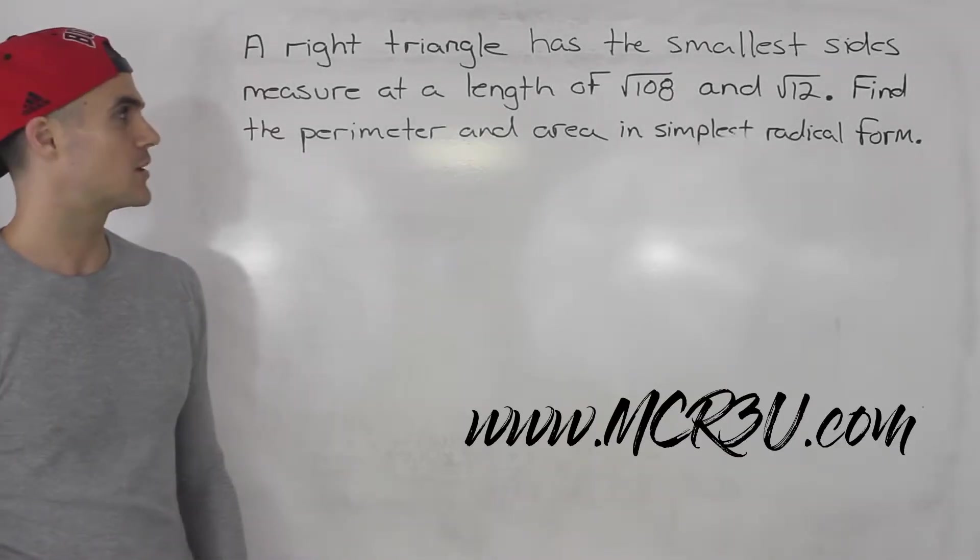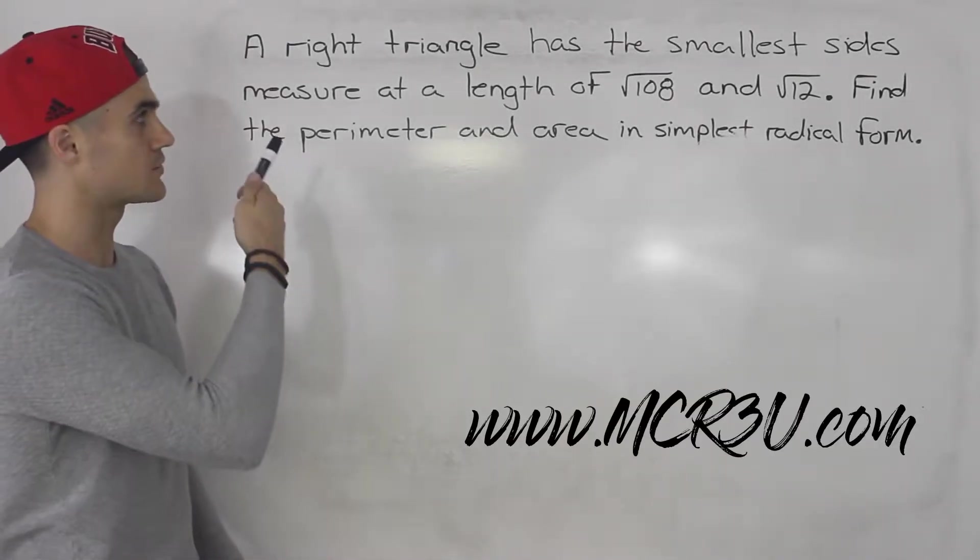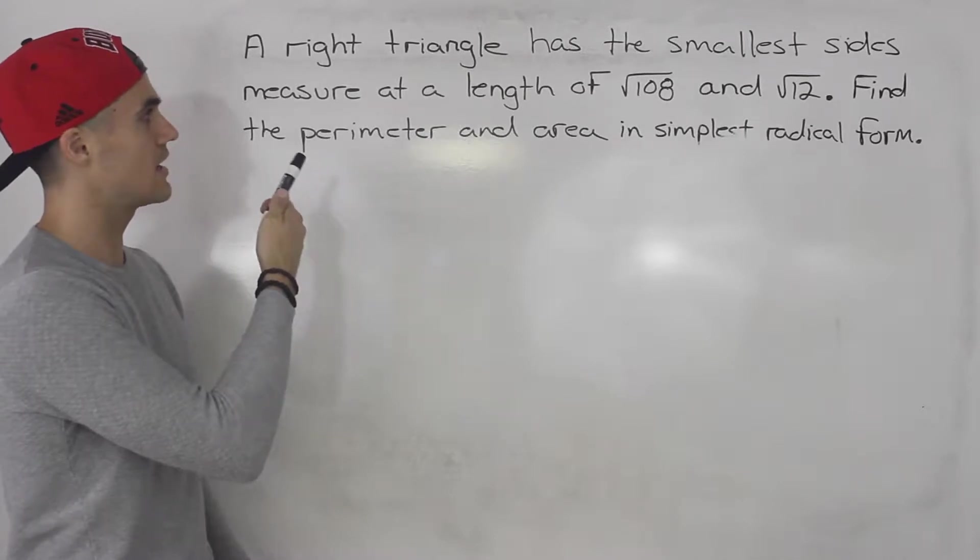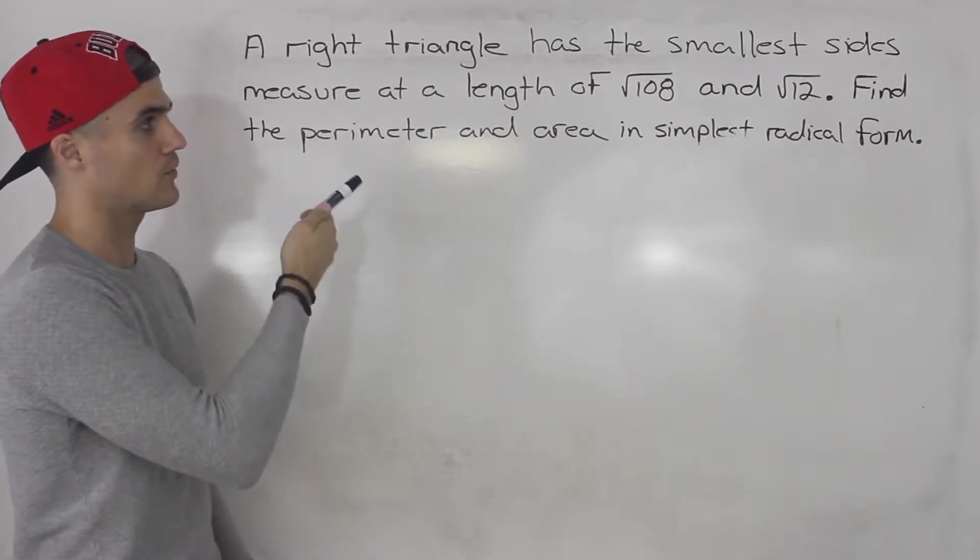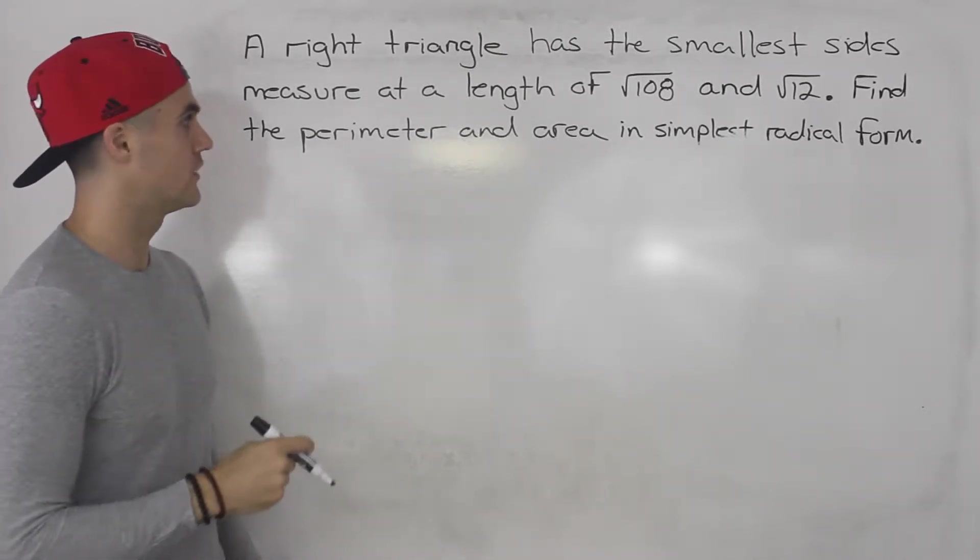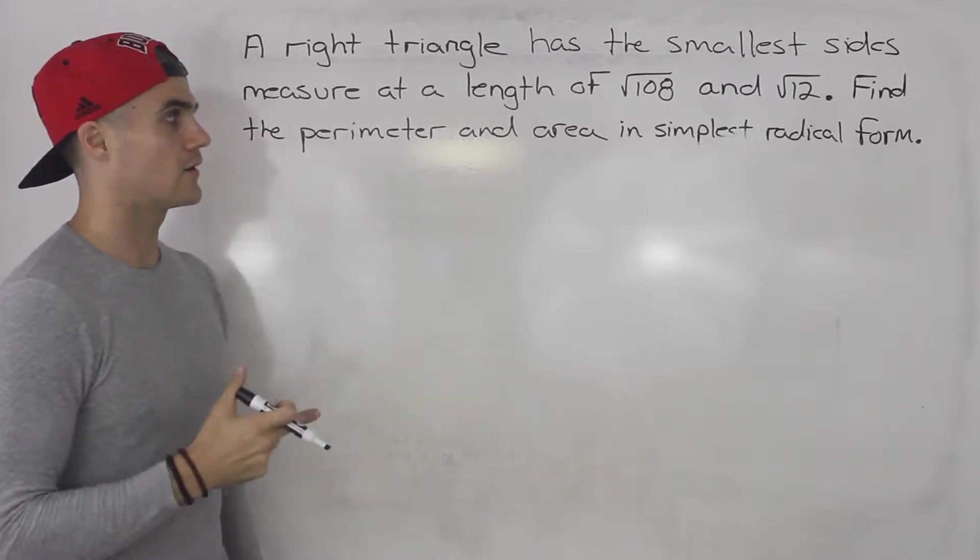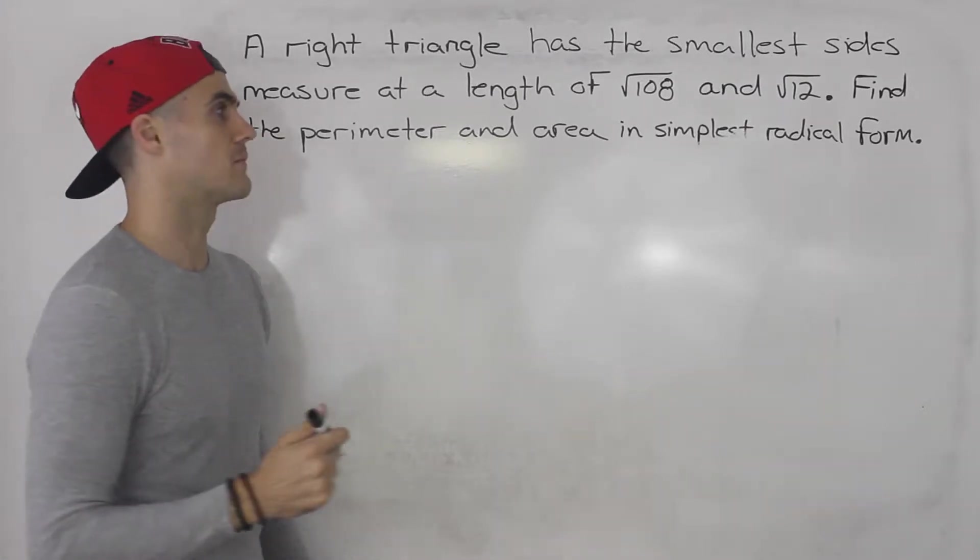What's up everybody? Welcome back. Patrick here. Moving on to the next question. We're told the right triangle has the smallest sides measured at a length of root 108 and root 12. Find the perimeter and area in simplest radical form.